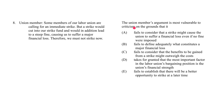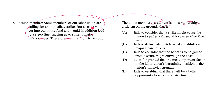Let's take a look at a flawed descriptive weakening question, starting with the question stem. The union member's argument is most vulnerable to criticism on the grounds that it does something. Notice a couple of things: we're told that there is an argument here, and this argument is not the best argument. We're straight up told that the argument is vulnerable to criticism. What's left for us to figure out is why this argument is vulnerable to criticism.